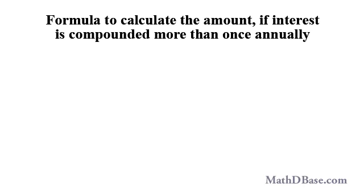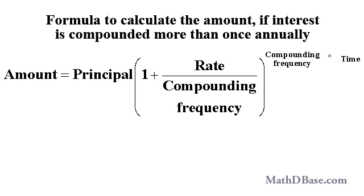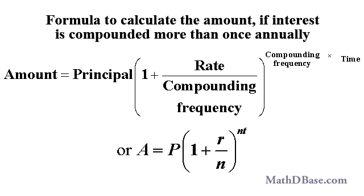If the interest is compounded more often than once annually, there is another formula to calculate the amount: A equals P times (1 plus R over N) raised to the power of N times T, where N, the compounding frequency, is the number of times that the interest will be compounded per year.